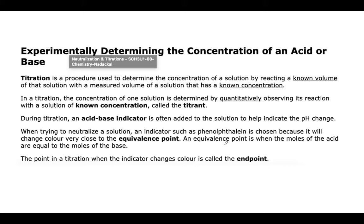In a titration, the concentration of one solution is determined by quantitatively observing its reaction with a solution of known concentration called a titrant. So of the two solutions, the one that you know the concentration of is called the titrant. During a titration, an acid-base indicator is often added to the solution to help indicate the pH. As you're adding the solution of unknown concentration, you want to see when the pH is changing, and in order to visually see that, you're using an acid-base indicator.